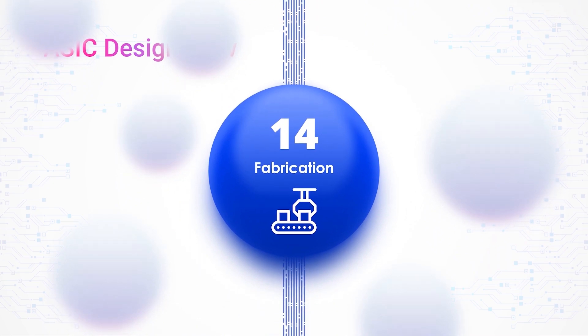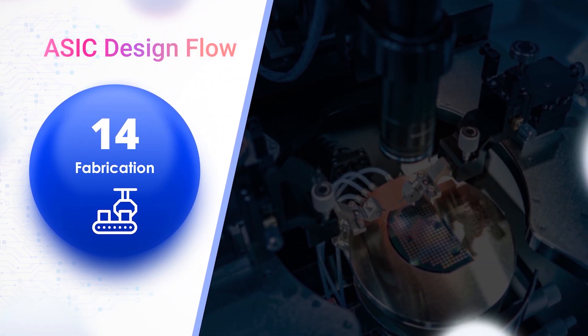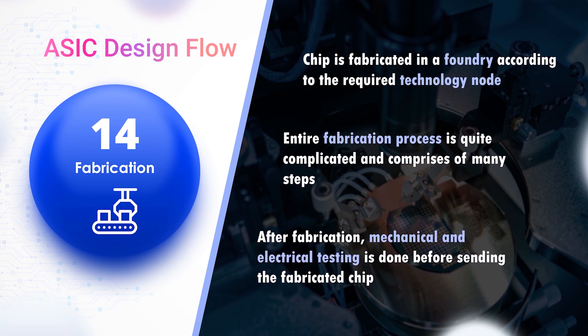Chip Fabrication: The chip is fabricated in a foundry according to the required technology node. The entire chip fabrication process is quite complicated and comprises many steps. Discussing the complete fabrication process is out of the scope of this video, and a separate video will be made in the future. After fabrication, mechanical and electrical testing of the chip is done in the foundry before it is sent back to the design company.